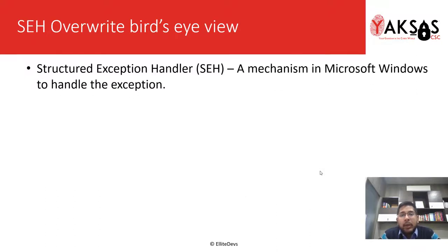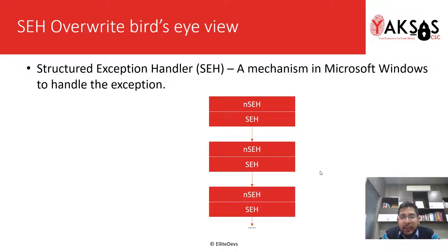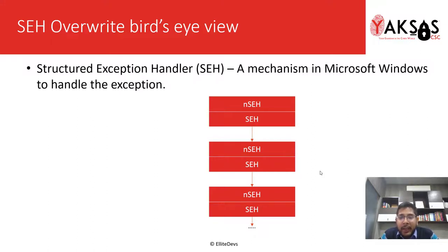So let's see what a structured exception handler is. It's a mechanism in Microsoft Windows to handle an exception. An SEH is a linked list of exception handlers — it contains a pointer to the current exception handler record and the next exception handler record. Since the stack grows downward, we encounter the NSEH first and then the SEH.